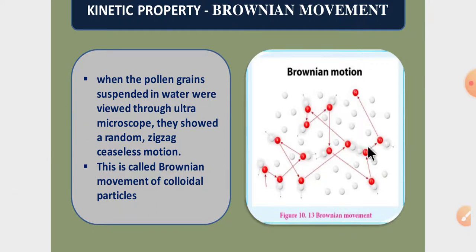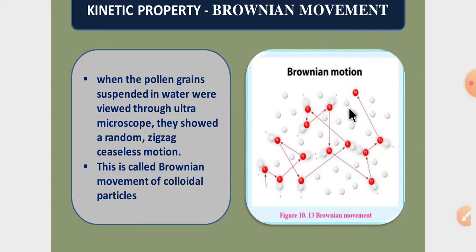Next, the stability of the colloid. We understand the stability of the colloid through Brownian motion. When molecular particles are in rapid movement, one colloidal particle cannot come close to another. The Brownian movement does not allow the particles to be attracted together, and the force of gravity cannot settle them. So Brownian motion explains the stability of the colloid.